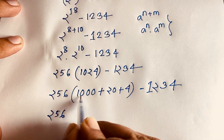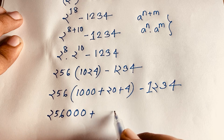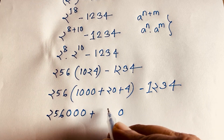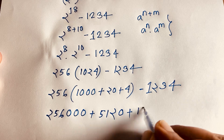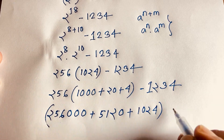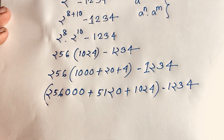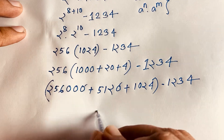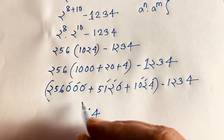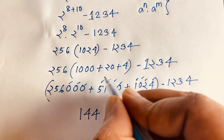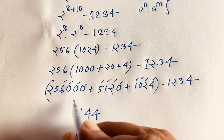So computing 256 times 1024: 256 times 1000 equals 256,000; 256 times 20 equals 512 times 10, so 5120; and 256 times 4 equals 1024. Adding these: 256,000 plus 5,120 plus 1,024 gives 262,144. Then subtracting 1234.